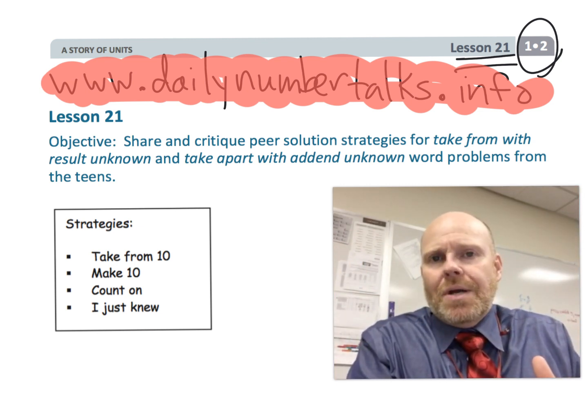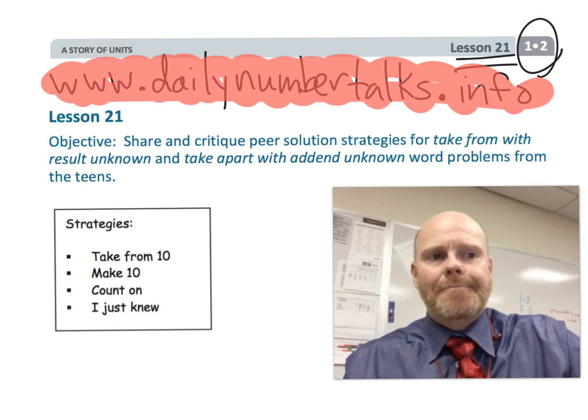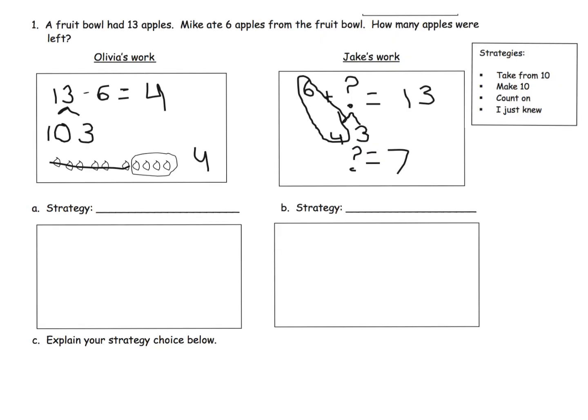That's really what lesson 21 is. So let's get going on that. We have a fruit bowl. It had 13 apples. Mike ate six. How many apples were left? The idea is we have this list of strategies over here that we get to choose from. We're going to look at Olivia's and Jake's method and try to identify the strategy they're using.